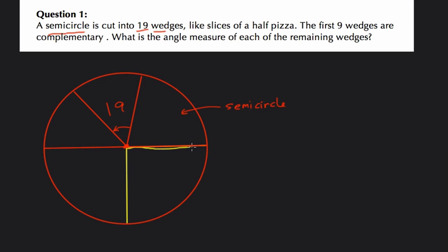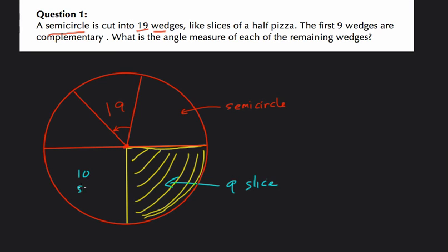So here, you can imagine that basically half of the semicircle is taken up by these nine pieces. So this area right here is taken up by nine different slices. And there are how many slices in total? Well, there are 19. So that means there are 10 slices remaining in the other half of the semicircle. And because 90 degrees of this is taken up already, there's only 90 degrees left.